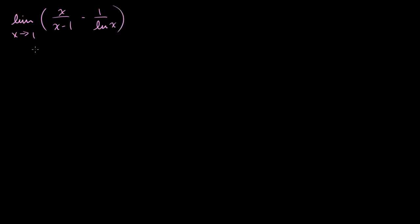Let's see what happens when we just try to plug in 1. We get 1 over 1 minus 1, so 1 over 0, minus 1 over the natural log of 1. Since e to the 0 equals 1, the natural log of 1 is 0. So we get 1 over 0 minus 1 over 0 — a strange undefined form.